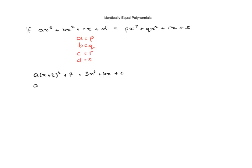So a by (x + 2) squared is x² + 4x + 4. Then we have the plus 7 is equal to the right hand side 3x² + bx + c.